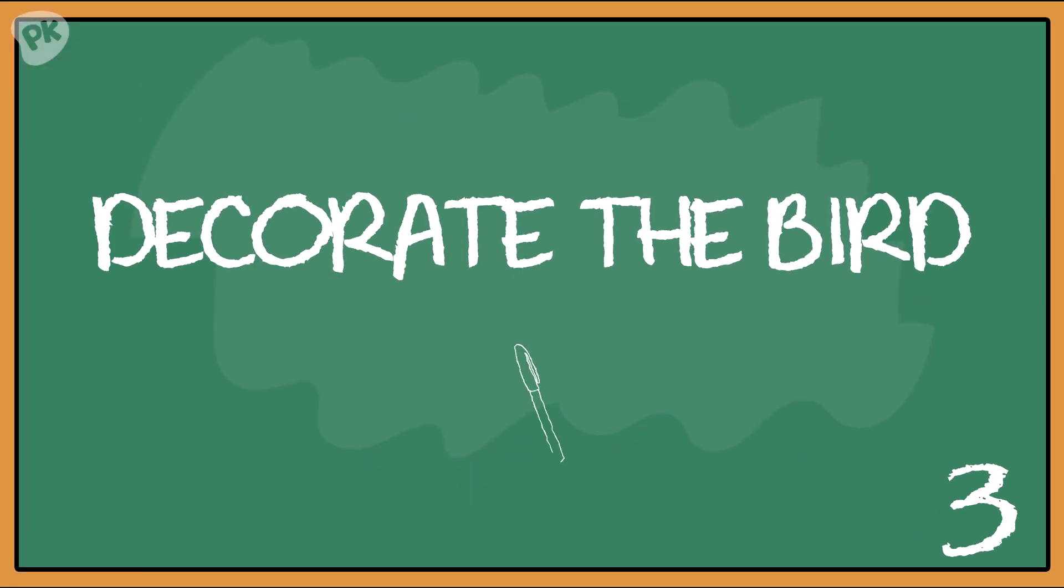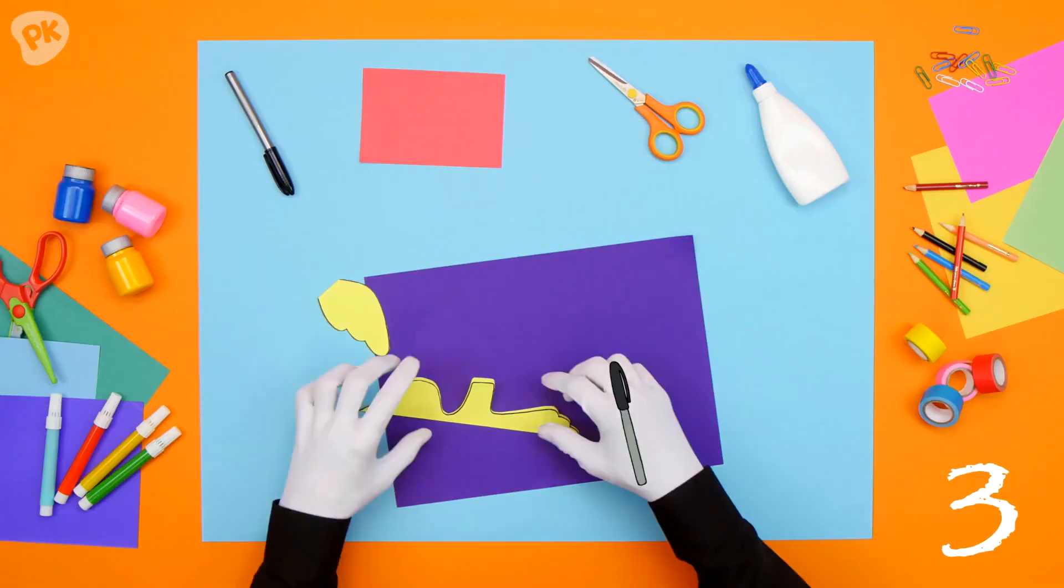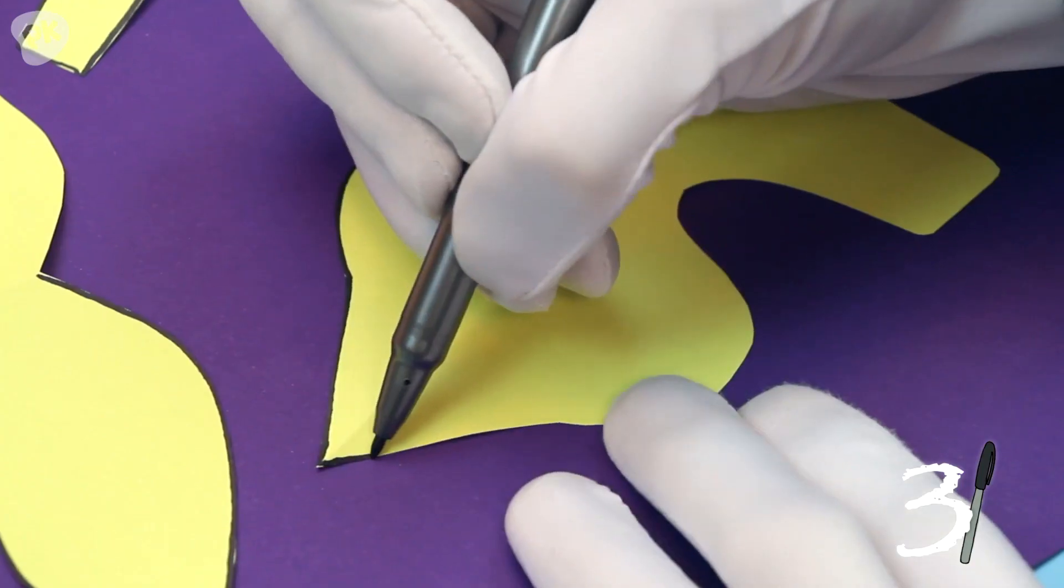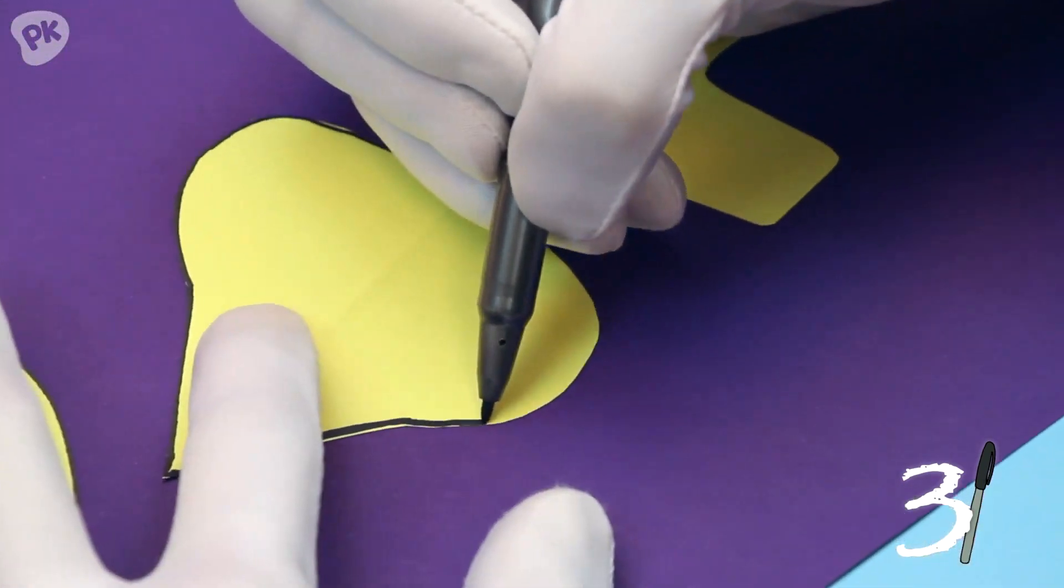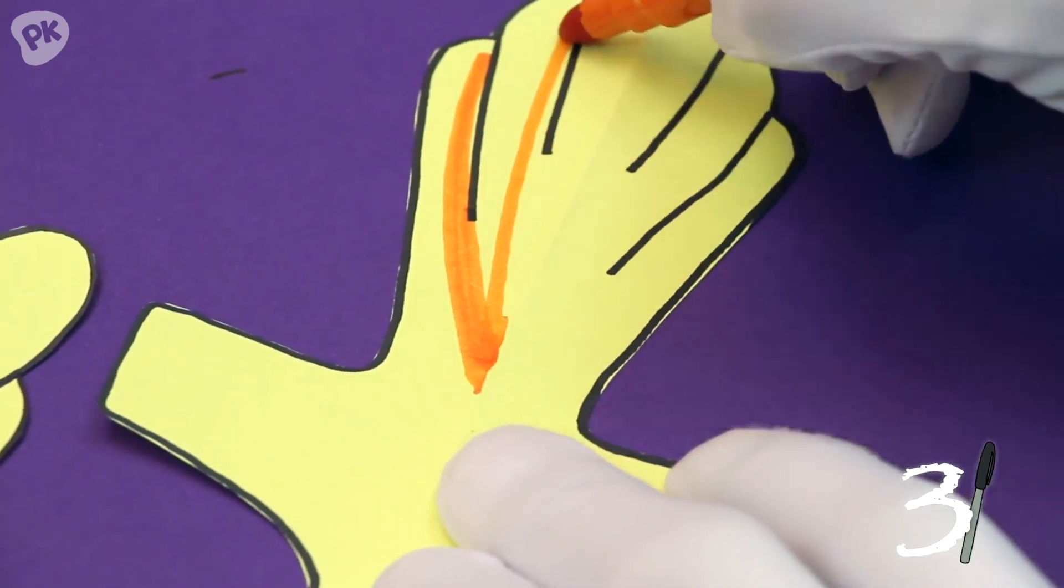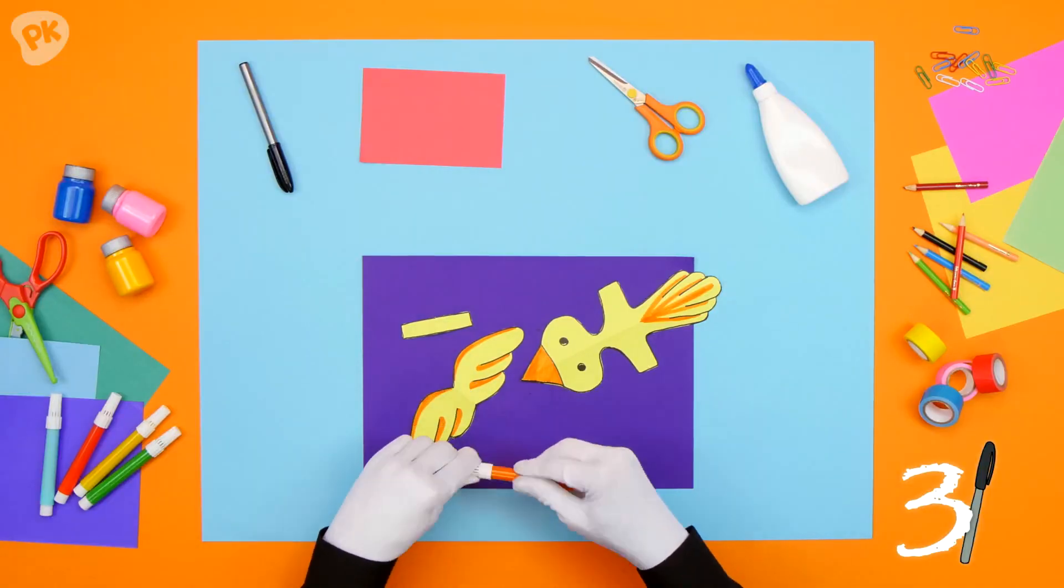Step 3. Let's give the bird some style. Time to use your colored pen to make your bird look amazing. Oh, don't forget its eyes. There we go! Some wings, some tail feathers, a little bit of color, and whammy! Looking good!